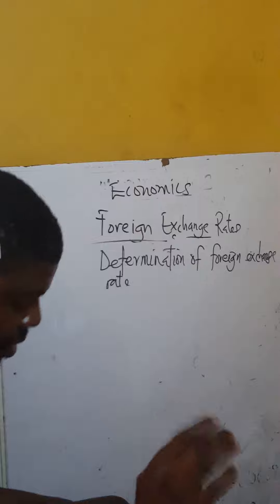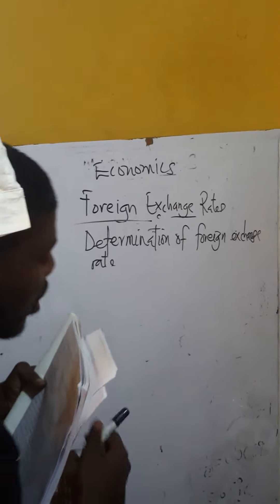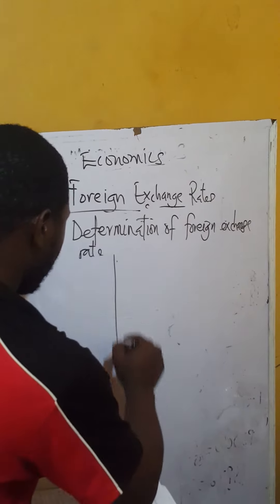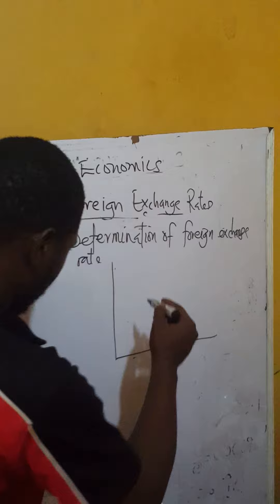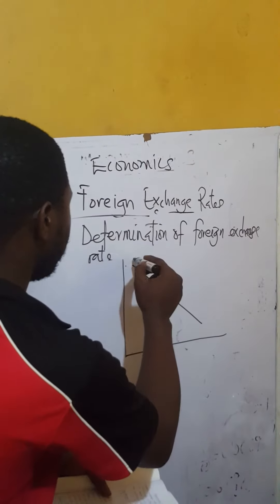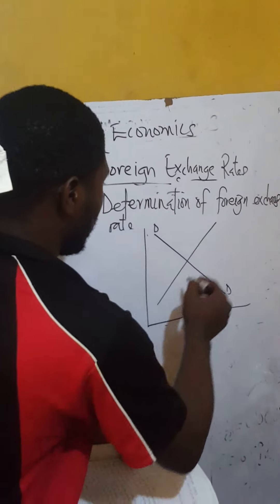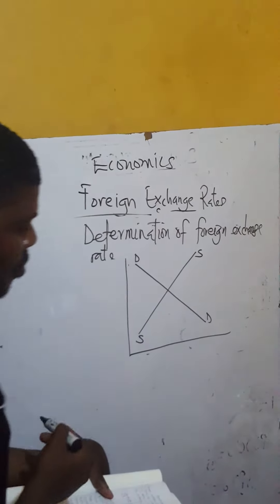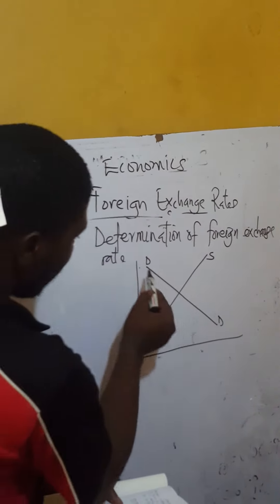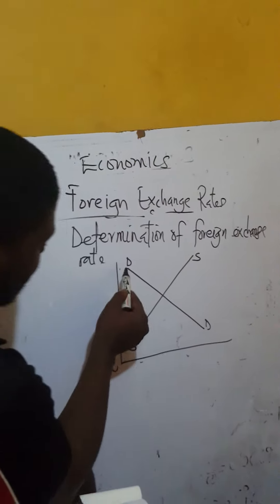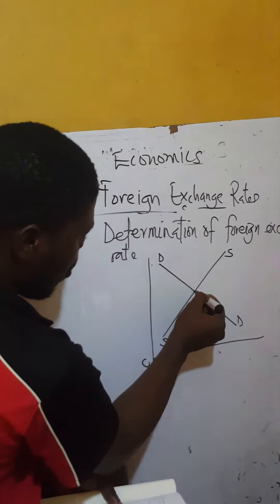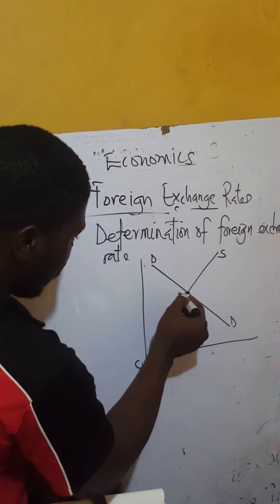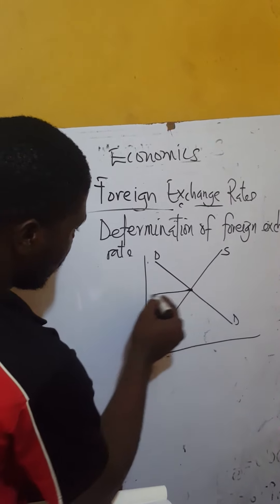So I asked you to watch a previous video on the basic demand and supply. When demand and supply interact — demand for foreign exchange and supply of foreign exchange — there will be a point of equilibrium. That point of equilibrium is where the exchange rate is determined.